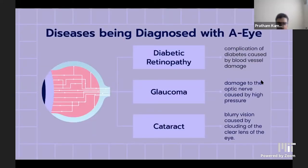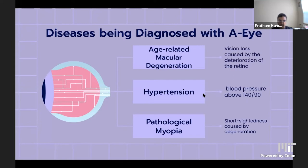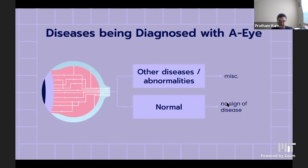We are classifying ocular diseases into eight categories: diabetic retinopathy — an eye condition complication of diabetes caused by blood vessel damage; glaucoma — caused by damage to the optic nerve due to high pressure; cataracts — blurry vision caused by clouding of the clear lens of the eye; age-related macular degeneration — vision loss caused by deterioration of the retina; hypertension — blood pressure within the eye higher than 140 by 90; pathological myopia — short-sightedness caused by deterioration; other diseases — a miscellaneous category; and normal — no disease detected.